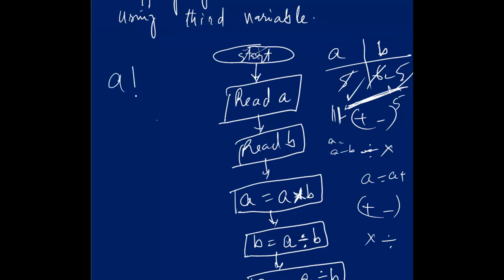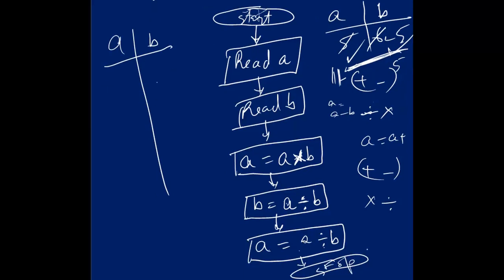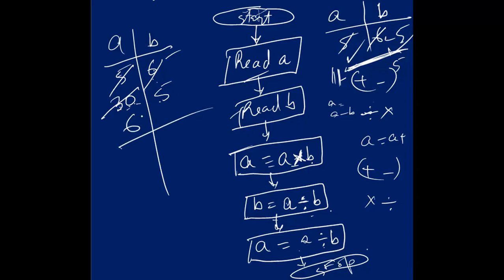Now I will draw A and B in memory. Suppose A is 5 and B is 6. We read them: A is 5, B is 6. Now A is equal to A multiplied by B — 5 into 6 is equal to 30. B is equal to A divided by B — 30 divided by 6 is equal to 5. A is equal to A divided by B — 30 divided by 5 is equal to 6. Finally we got the answer: it was 5 and 6, and now it is 6 and 5.